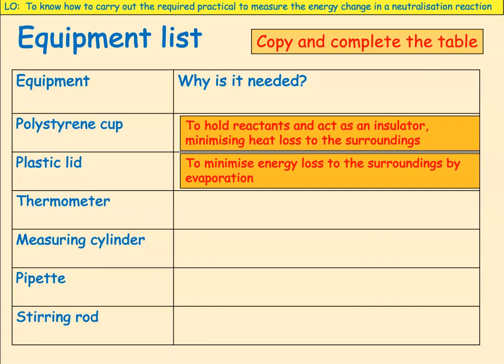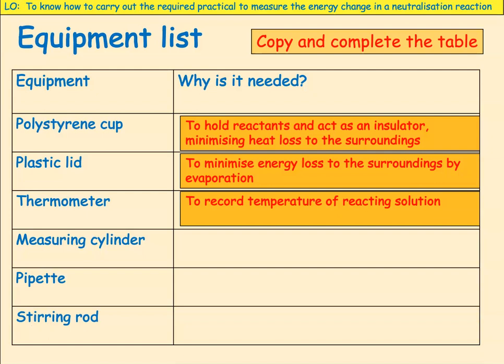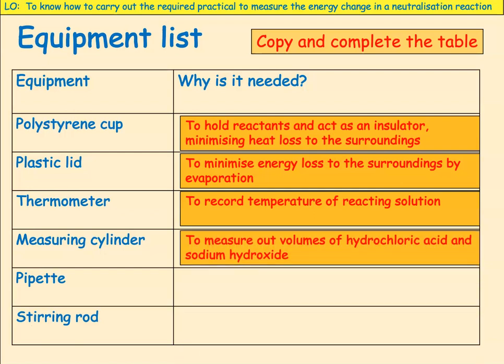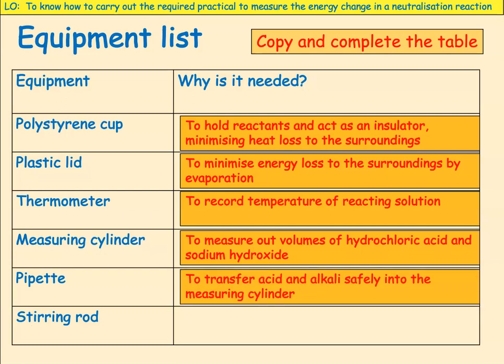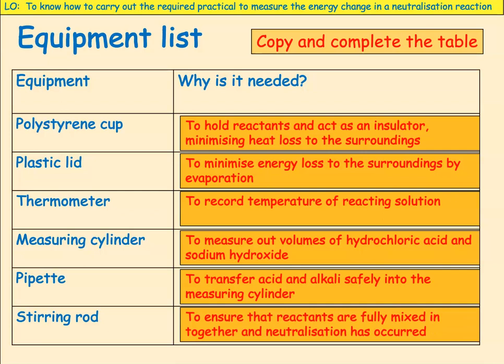Why do we need a thermometer? To record the temperature of the solutions as they're reacting. Why do we need a measuring cylinder? To accurately measure out the volumes of hydrochloric acid and the amounts of sodium hydroxide being added. Why do we need a pipette? To transfer the acid and alkali safely into the measuring cylinder. The stirring rod is to ensure that the reactants are fully mixed and neutralisation has occurred.